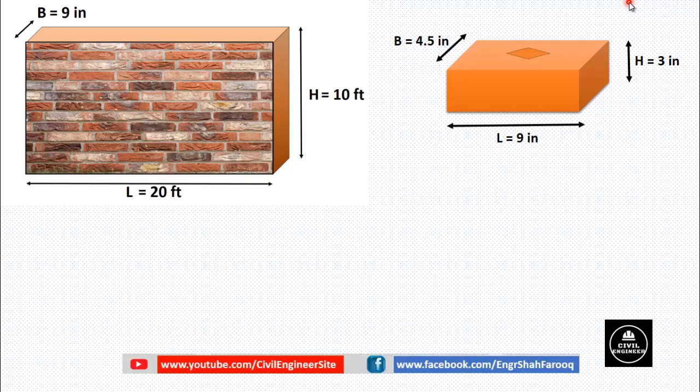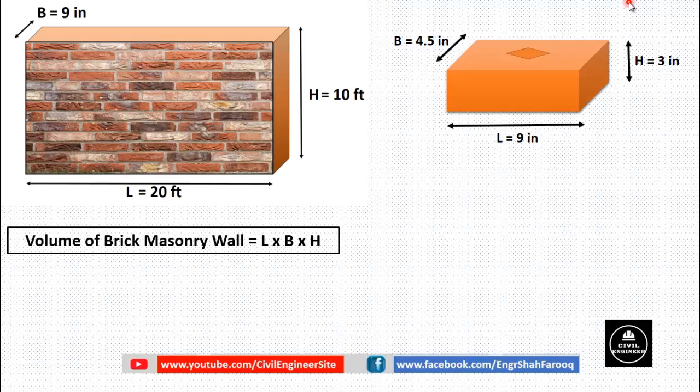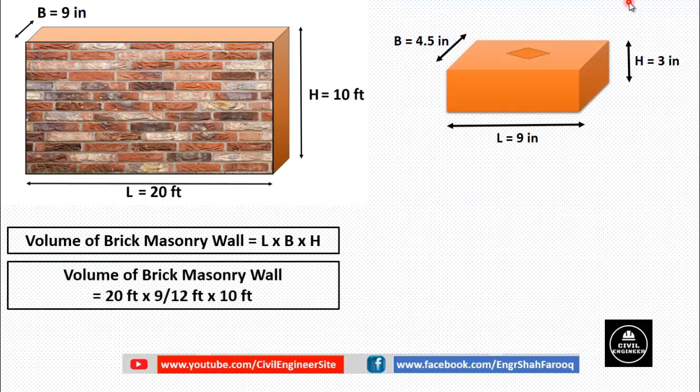First we will calculate volume of the masonry wall. Volume of the masonry wall is equal to length multiplied by breadth multiplied by height. Just put values in this equation. We will get volume of brick masonry wall is 20 feet multiplied by 9 by 12 multiplied by 10 feet. Here this 9 is divided by 12 to change inches into feet.